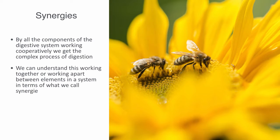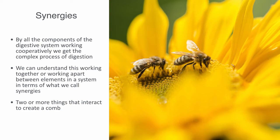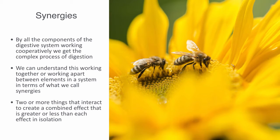We can understand this working together or working apart between elements in a system in terms of what is called synergies. The term synergy comes from the words 'working together' — two or more things that interact to create a combined effect greater or less than each of their effects in isolation. Synergy is a prevalent phenomenon in biological systems that arises from the concerted action of multiple factors, producing an amplification or cancellation effect — what we call constructive or destructive relations.